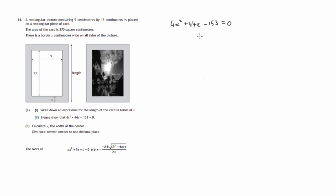These numbers, 4, 44, negative 153, we don't know them, and we're told the formula in terms of these unknown coefficients a, b, and c. So, we'll have to compare the equation that we're trying to solve with this general quadratic equation, so that we can work out what the values of a, b, and c are.